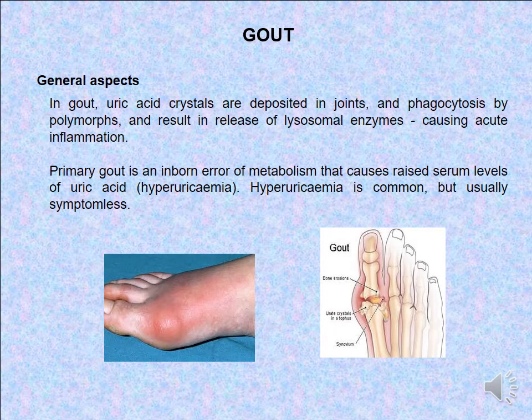Gout: in gout, uric acid crystals are deposited in joints and are phagocytosed by polymorphonuclear cells, resulting in the release of lysosomal enzymes causing acute inflammation. Primary gout is an inborn error of metabolism that causes raised plasma levels of uric acid — hyperuricaemia. Hyperuricaemia with uric acid is common but usually asymptomatic.